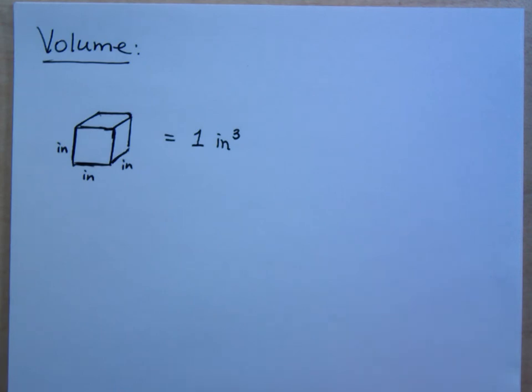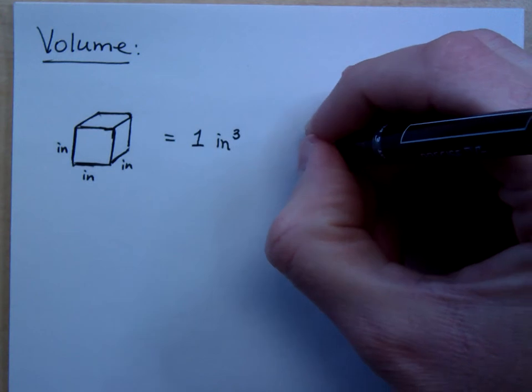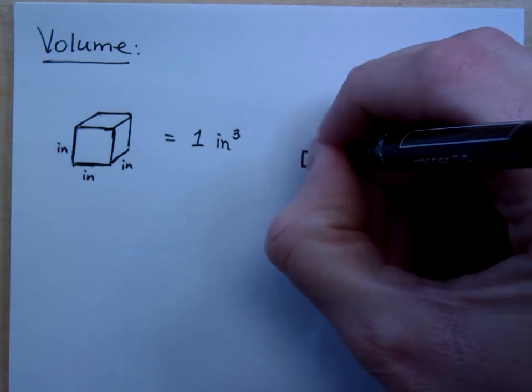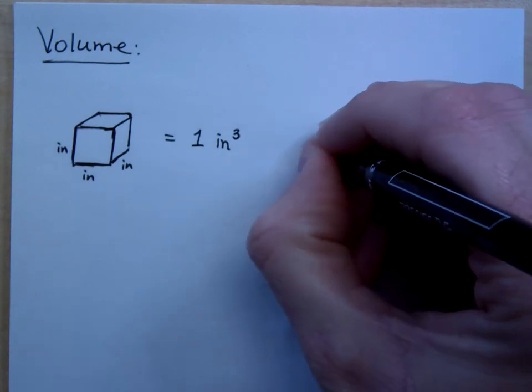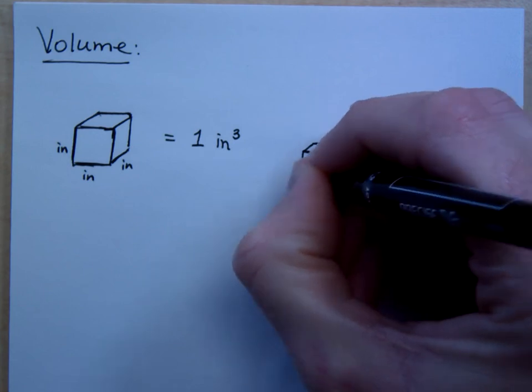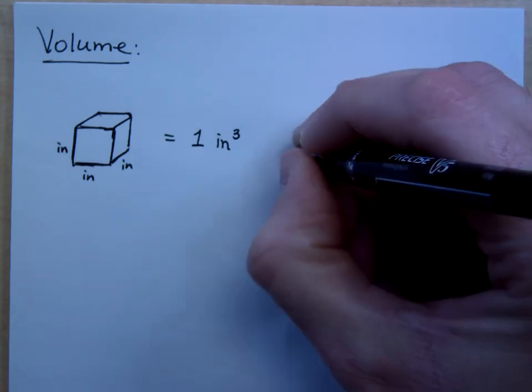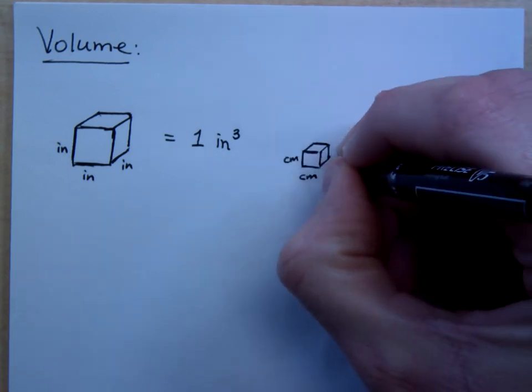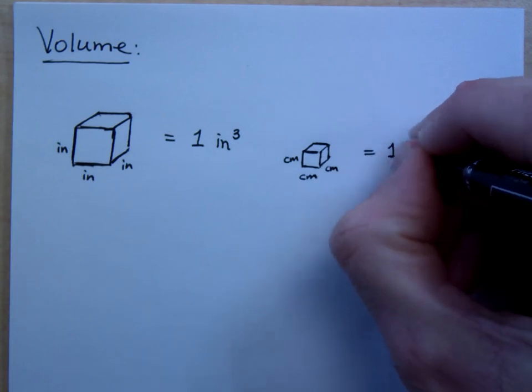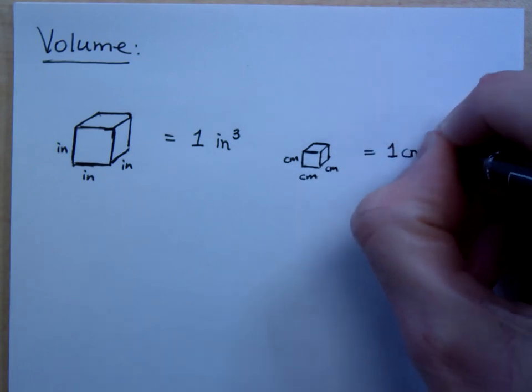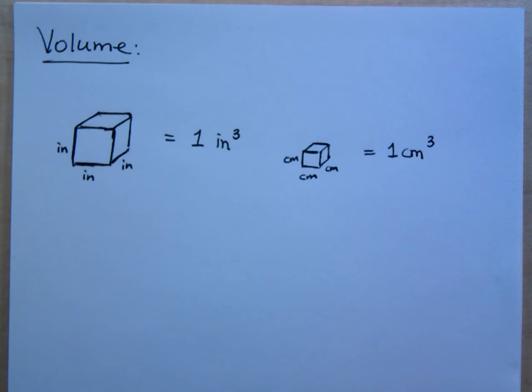There's a cubic inch. You could have, of course, a little bit smaller, maybe make this guy a cubic centimeter. So this is one centimeter by one centimeter by one centimeter, then you have one cubic centimeter. And when we're talking about volume, we're trying to figure out how many of these little cubes could we fit inside of a figure.